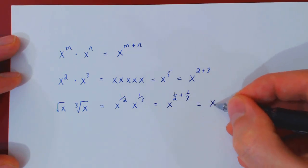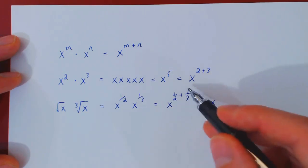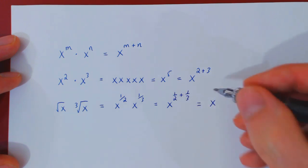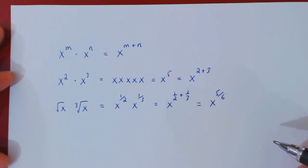And simplifying by putting under a common denominator, we have 3 plus 2, 5, over 2 times 3, 6. So this is x to the 5 over 6. And that's it.